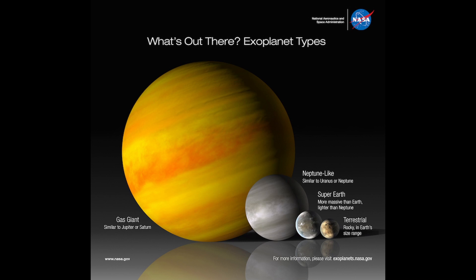Moving a step down from Jupiter, we get to Neptune-like planets. Neptune-like planets are smaller than Jupiter and denser, but they're not rocky yet — they're still made out of a lot of gas, and they could also be made out of a lot of ice. You could also have mini-Neptunes, which are Neptune-like planets in size between Earth and Neptune. As far as we know, we've never discovered a gas planet smaller than Earth.